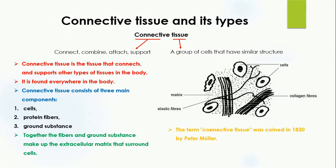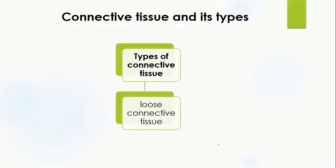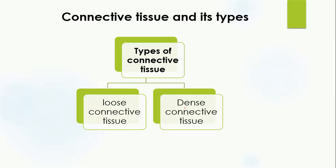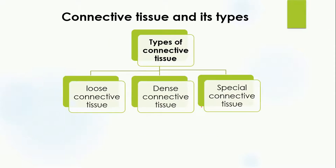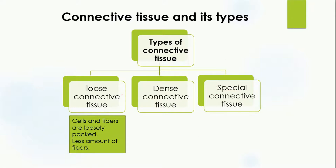The term connective tissue was coined in 1830 by Peter Muller. There are three types of connective tissues: the first is loose connective tissue, the second is dense connective tissue, and the third is special connective tissue.